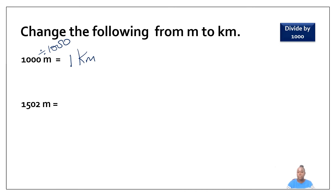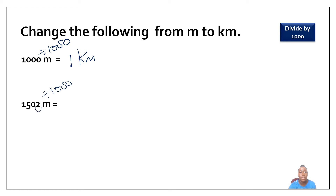I have one thousand five hundred and two meters and I like to change it to kilometers. I need to divide by one thousand. How can I divide this number by one thousand? I can shift my decimal point three times to the left — one, two, three — giving me one point five zero two kilometers.